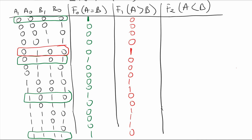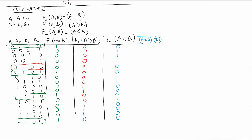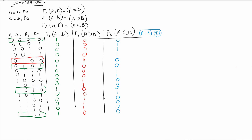For the case where A is less than B, we can say this is the NOT of (A equals B OR A bigger than B). So I will be filling in the remaining entries accordingly: 0,1,1,1 / 0,0,1,1 / 0,0,0,1 / 0,0,0,0. So these are the three functions for my comparator.